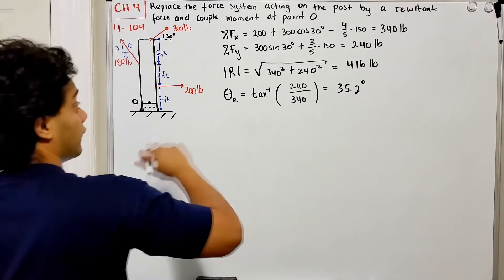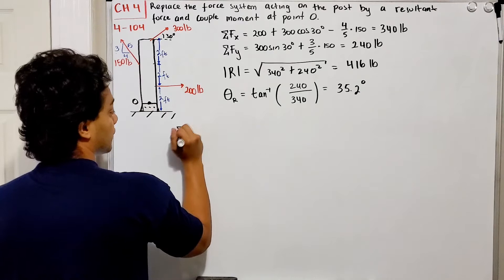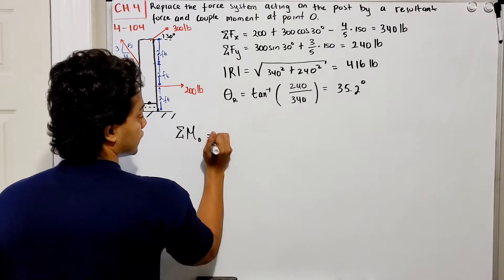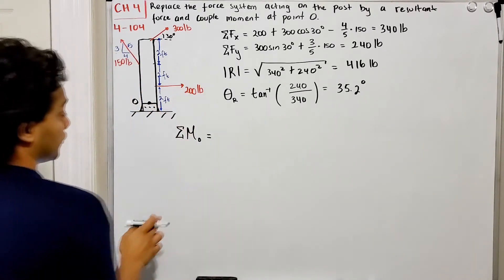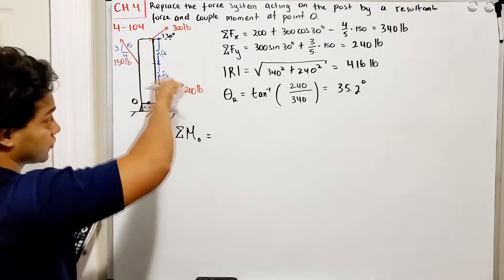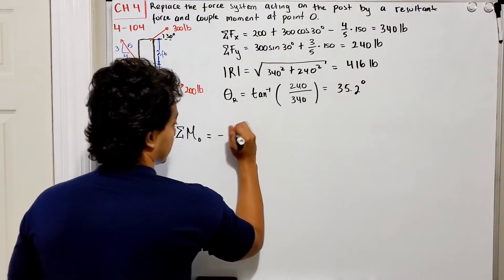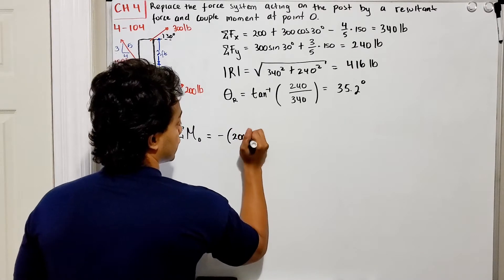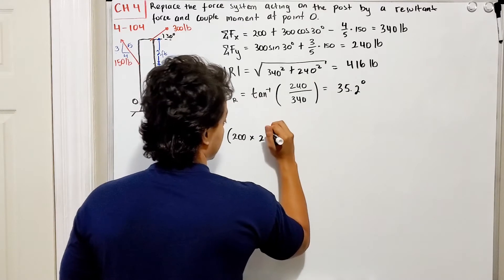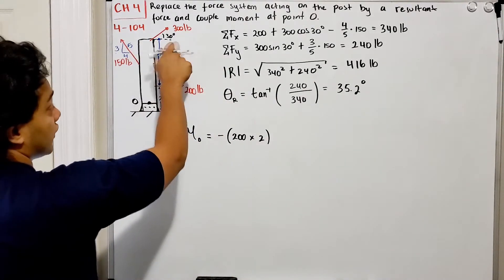We're done finding the forces. Now what about the moment about point O? The sum of moments about point O starts with the 200 pounds. This 200 pounds will push this way and try to rotate my system clockwise. For clockwise I'll use negative, so I have negative of my force multiplied by the distance, which is 2 feet. Same with the 300 pounds going to the left.